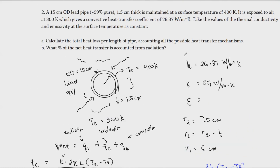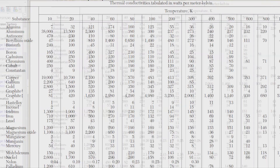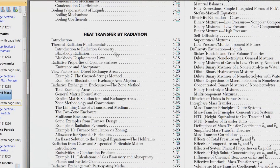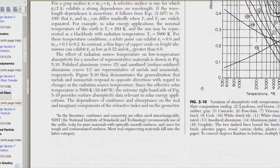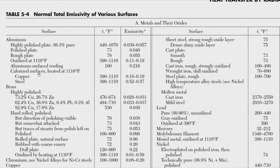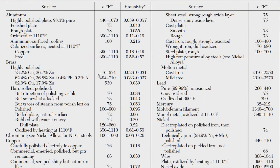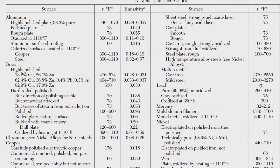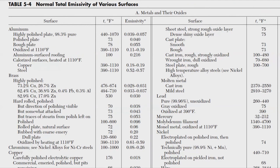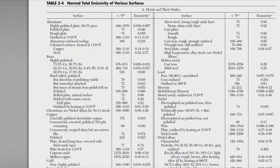The emissivity is not given directly but can be found in the handbook under Chapter 5, in the table of normal total emissivity of various surfaces. For 99% pure lead at 400 Kelvin, the table shows a range from 260°F to 440°F. Since 260°F converts to approximately 400 K, we use the lower value of 0.057.